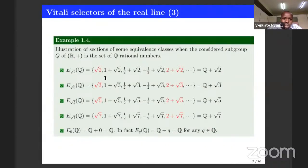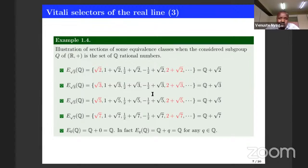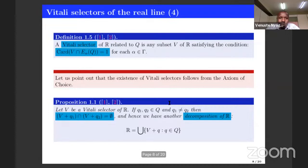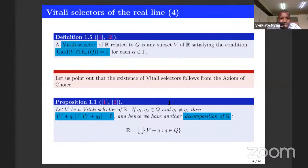If we are able to enumerate all equivalence classes, for example, you can take the first element from each and do it for all equivalence classes — that will be an example of a Vitali selector. The condition is that you have just one element from each equivalence class. That is why we need the implication of the axiom of choice, which tells us any such set should exist.